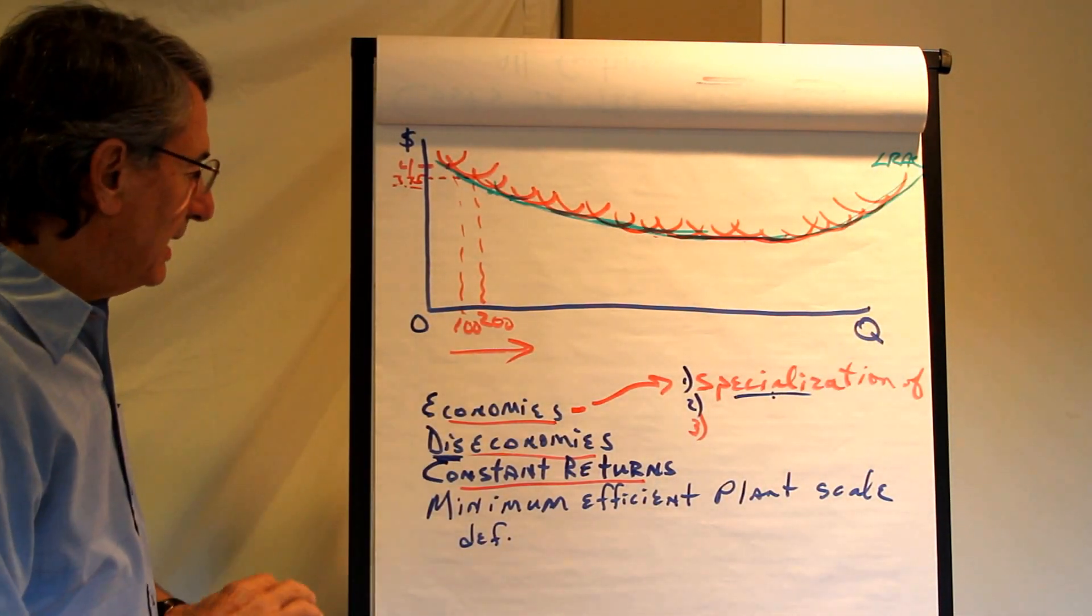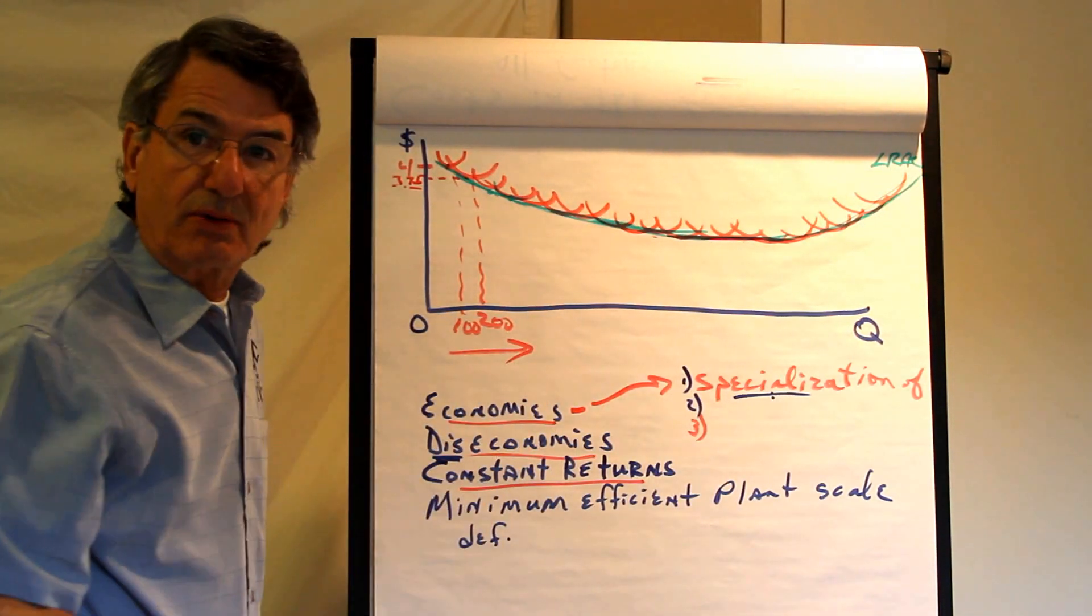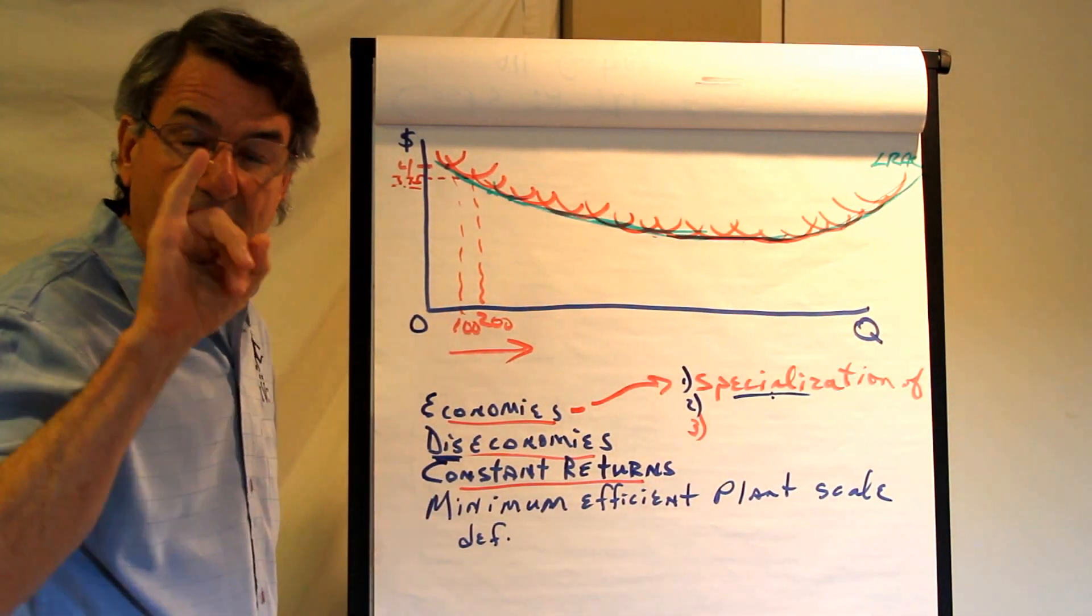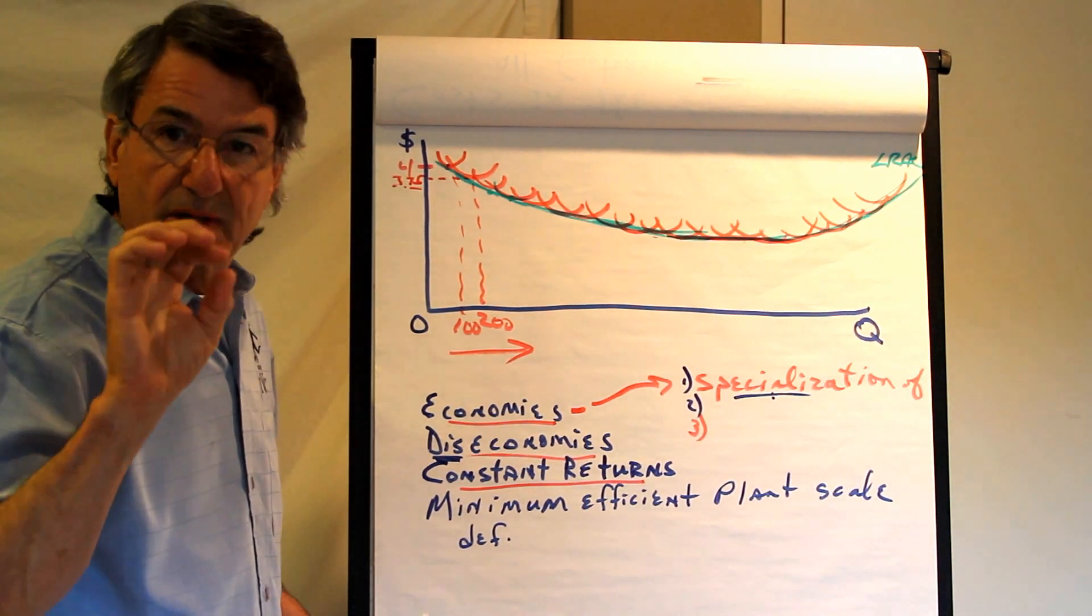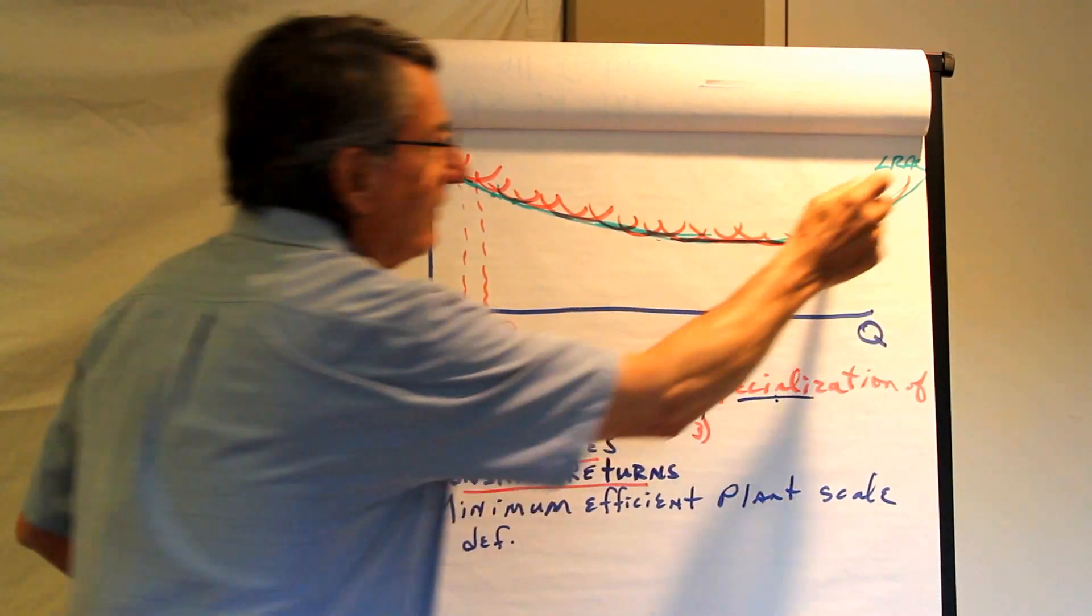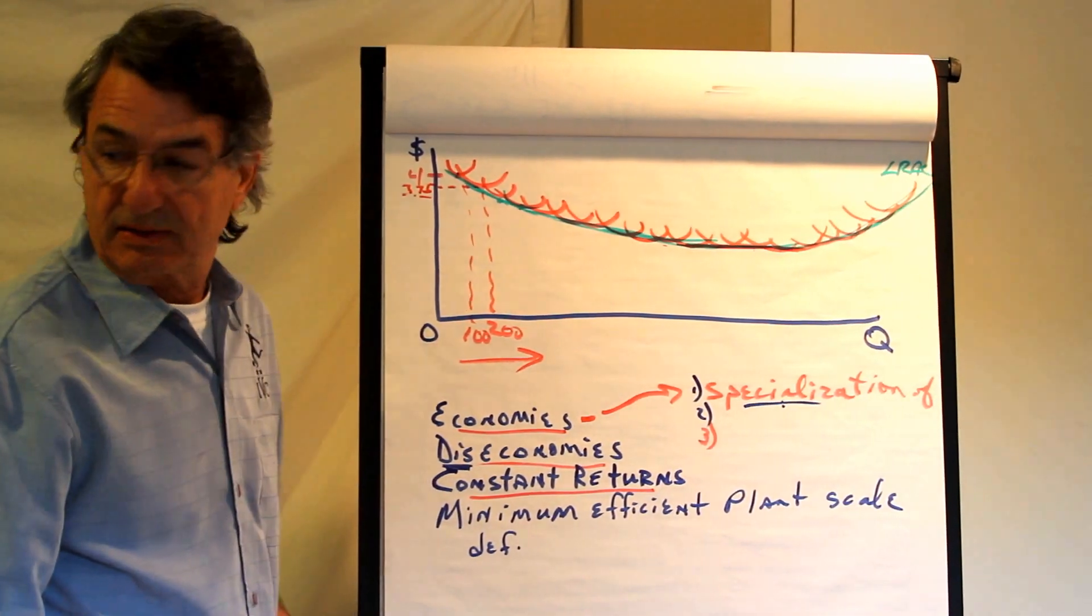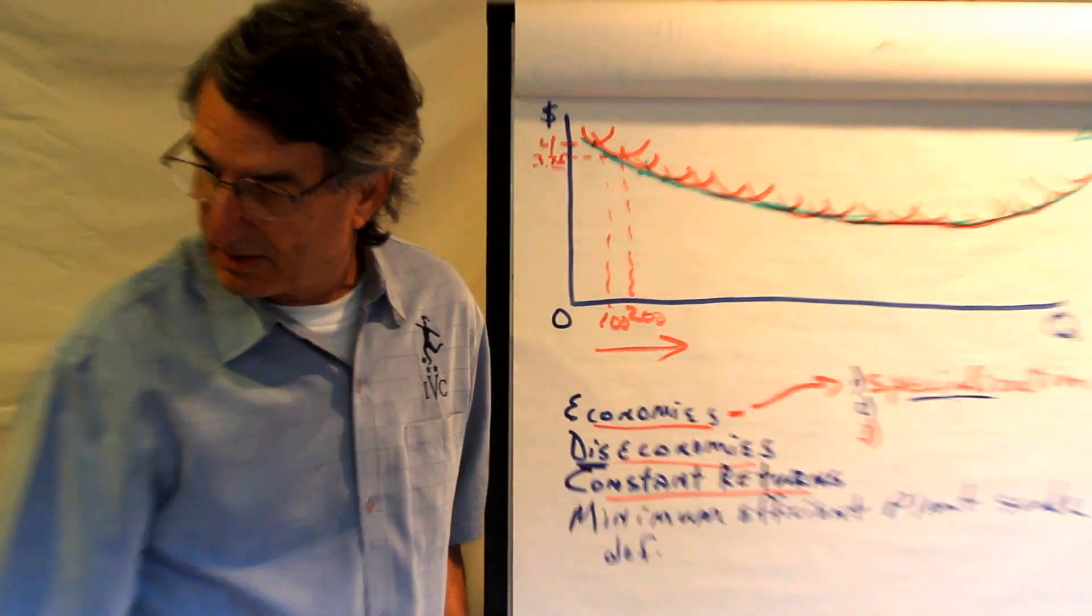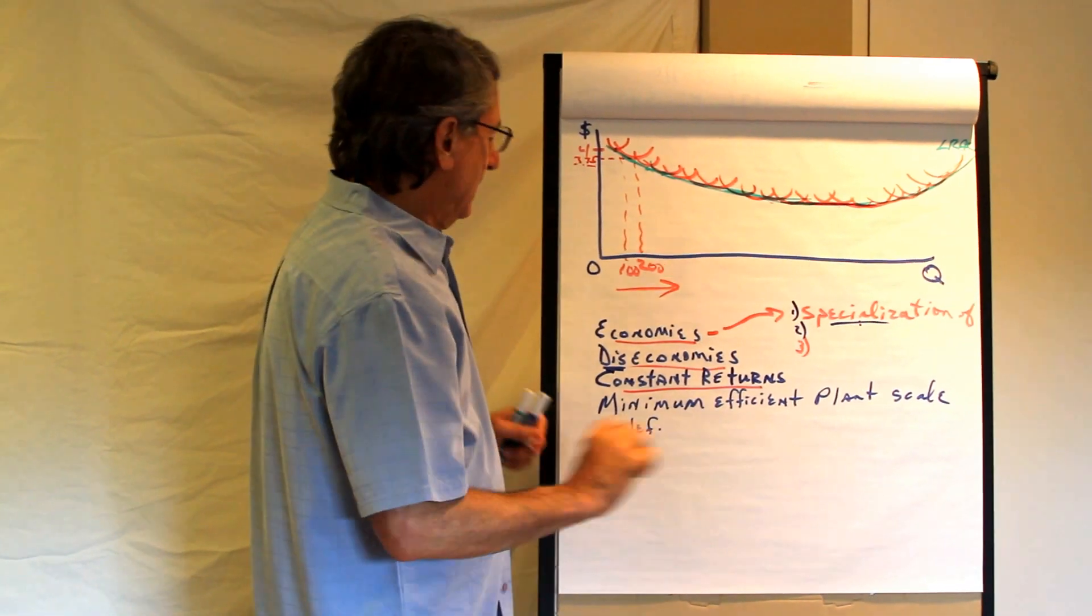And the long run average cost curve is U-shaped as well as the short run average cost curve. The short run average cost curve is U-shaped because of economies and diseconomies of scale. Excuse me, put that phone away. Pay attention please. I'm sorry.